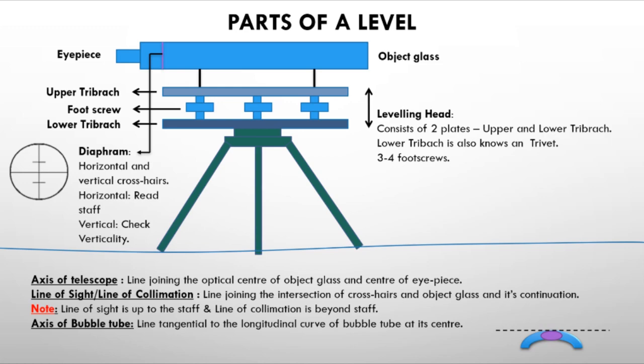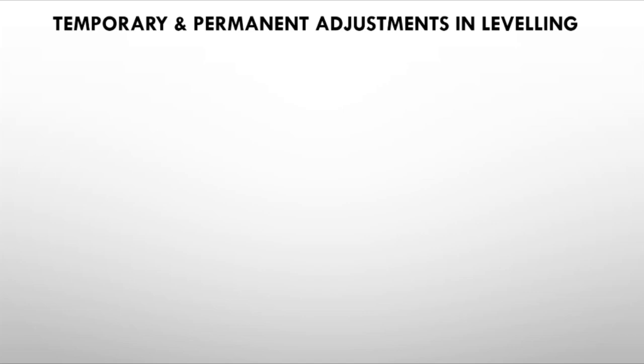Important terms to note: the axis of the bubble tube is the tangential line at the center of the tube. The vertical axis is the rotating axis of the instrument. There are two types of adjustments: temporary adjustment and permanent adjustment.